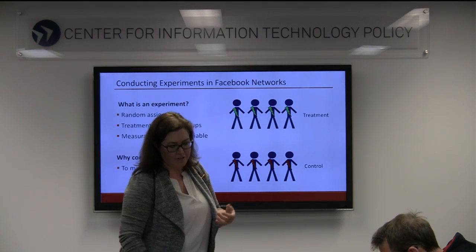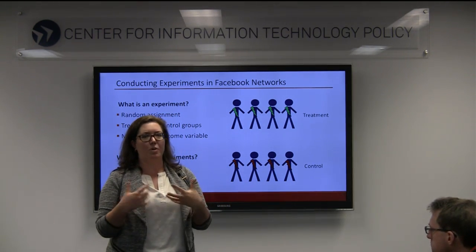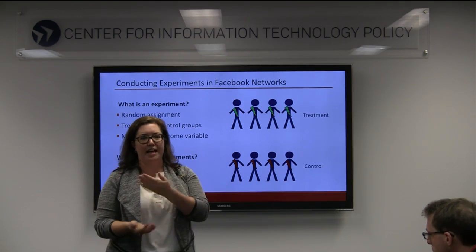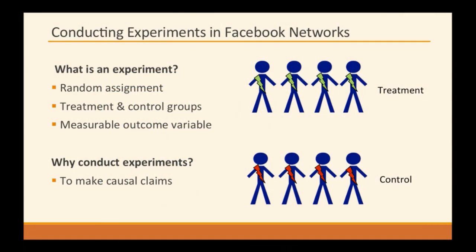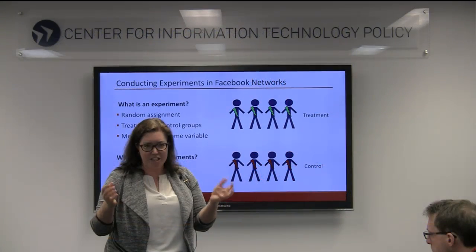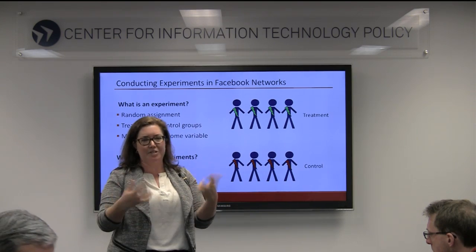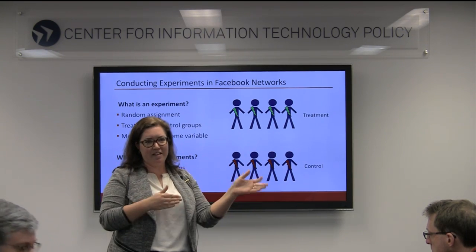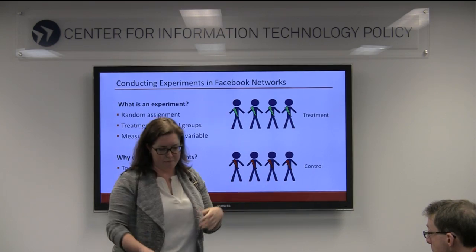We do this to make causal claims. Experiments are what you use to say X causes Y — for instance, if people use Facebook more, then they will vote more. You have to do the randomization, the assignment to treatment, and measure the outcome to say definitively that something causes a change in an outcome.